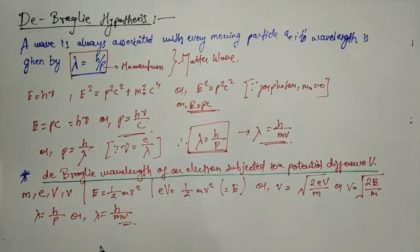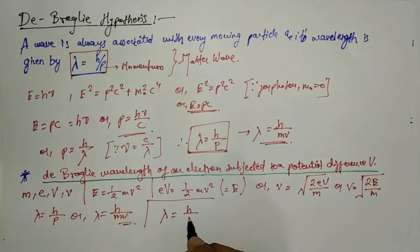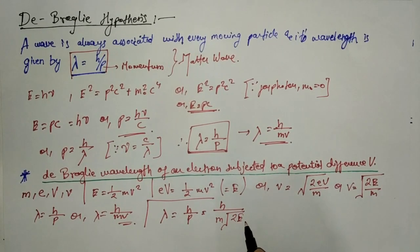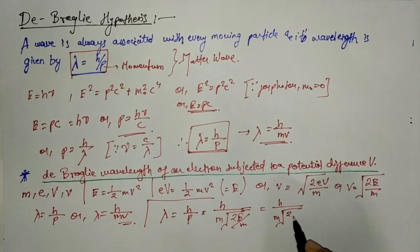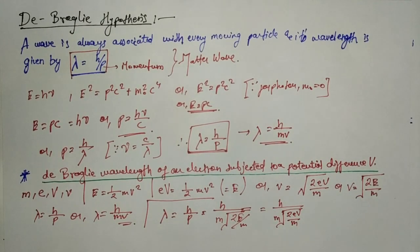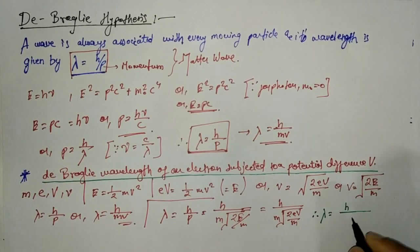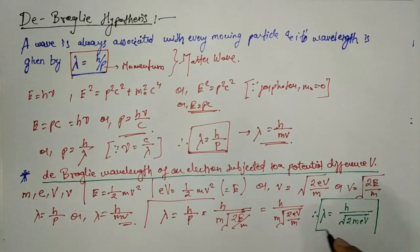Substituting all values: lambda = h/mv = h / (m × √(2eV/m)) = h / √(2meV). So the De Broglie wavelength for an electron accelerated through potential difference V is lambda = h / √(2meV).